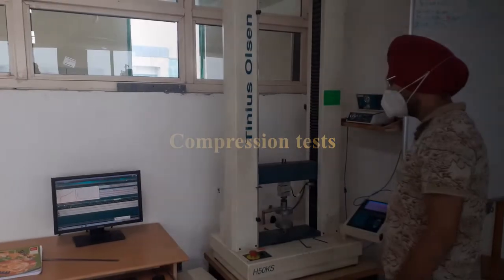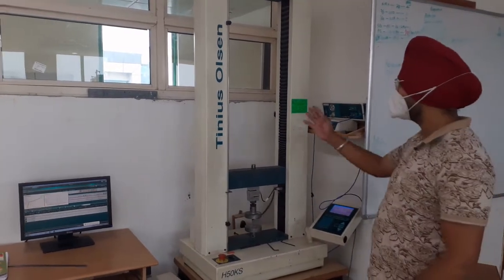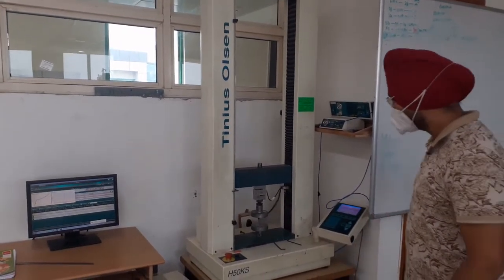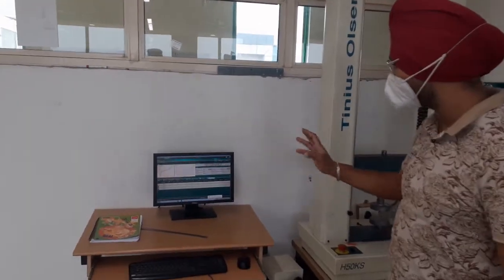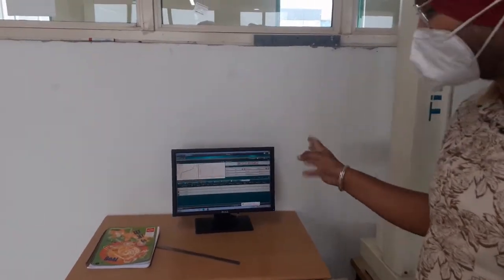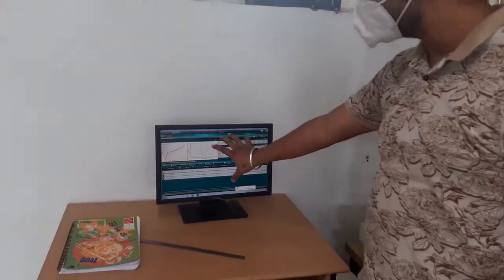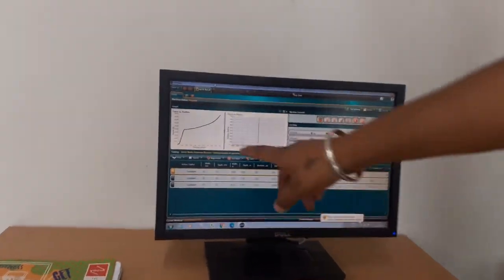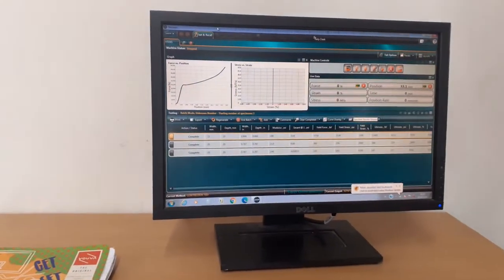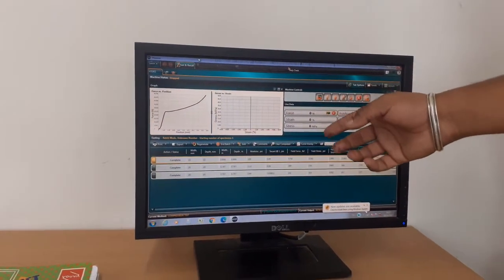Hello students, today we are doing an experiment on compression test by using the UDM. The software is the same for this test which we used for the tensile test, this is the Tinius Olsen software. Here we have to put the width and depth of our sample, and the values of force, stress, position, time, and position rates will show here.